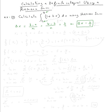By definition, x sub i is equal to a plus i times delta x. Here a is the lower limit, which is two, so x sub i equals two plus i times delta x, which is two over n. So x sub i is equal to two plus two over n times i.